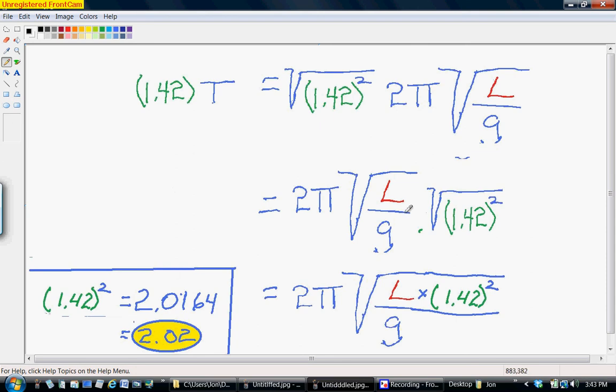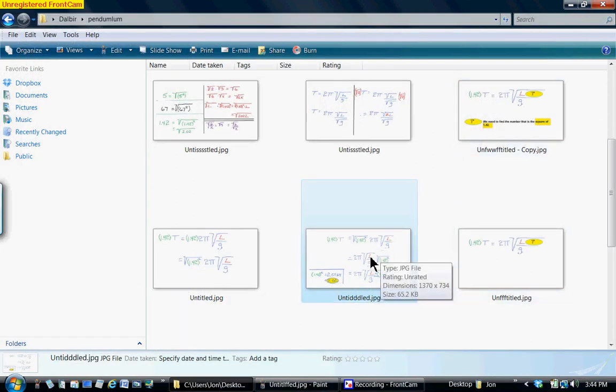Remember, 1 times L would be 100%, and 1.02 added to that factor of 1 is 2.02. So that's how we got the answer of an increase of 102% of the length of L to get our 42% increase in the period.